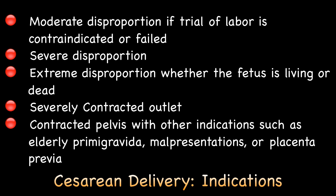Indications for caesarean section in contracted pelvis are: moderate disproportion if trial of labour is contraindicated or if it fails; marked disproportion; extreme disproportion whether the fetus is living or dead, because reductive embryotomy is now more or less obsolete; contracted outlet; and contracted pelvis with other indications such as elderly primigravida, malpresentations, or placenta previa.